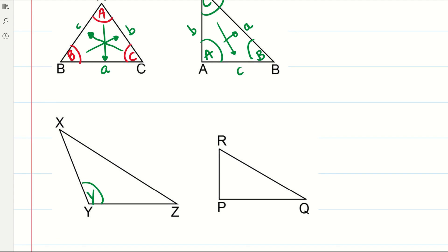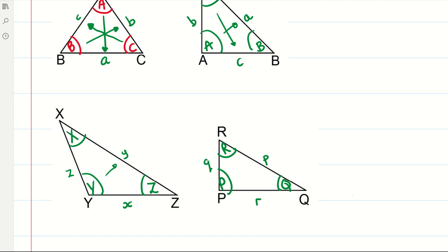This is still capital Y, capital Z, capital X, with lowercase x, lowercase y, lowercase z. Same here — all capital letters for the angles: P, R, Q, and the corresponding lowercase letters for the sides. So this is how we label the triangles.